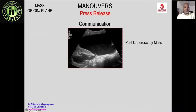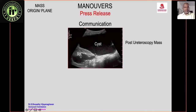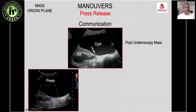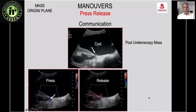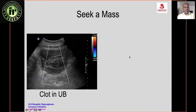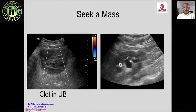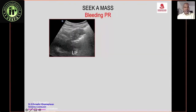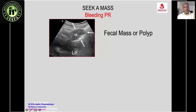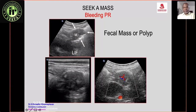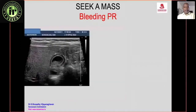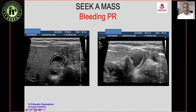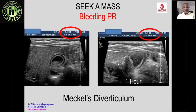Post-ureteroscopy, a large cystic mass with hydronephrosis is seen. Pressing and releasing with color Doppler shows bidirectional flow across a bridge in the ureter — confirming ureteric trauma with urinoma. In a patient with hematuria, a clot and a renal mass are identified on close inspection. For a rectal mass, color Doppler flow inside confirms a polyp rather than fecal matter. A mass with gut signature that remains aperistaltic on repeat scan one hour later is confirmed as a Meckel's diverticulum.